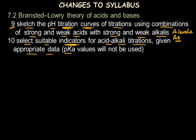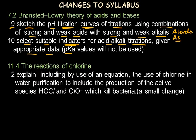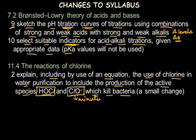The next change is in the topic of reactions of chlorine, which now requires explaining, including via equations, the use of chlorine in water purification — specifically to include the production of the active species hydrogen chlorate and chlorate ions, which kill bacteria. Earlier, hydrogen chlorate was already included and now the chlorate ion is also mentioned. This is just a minor change; the use of chlorine was already mentioned in the earlier syllabus for water purification.